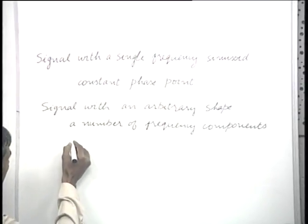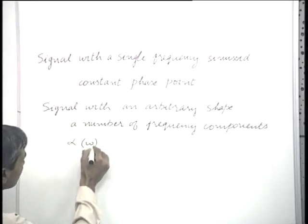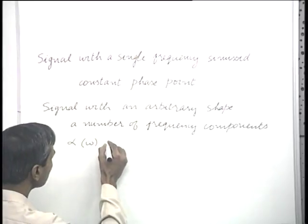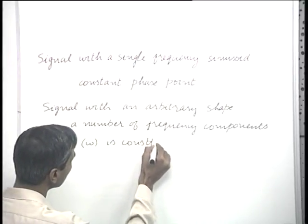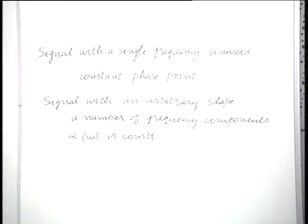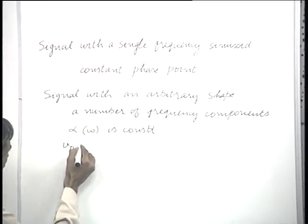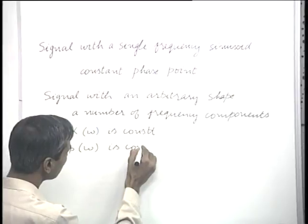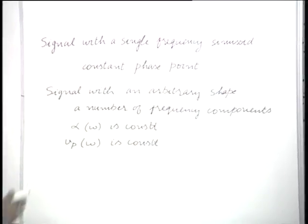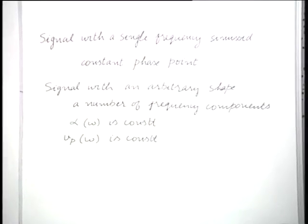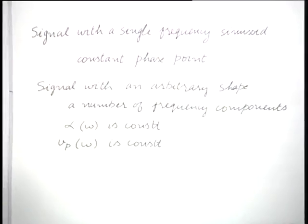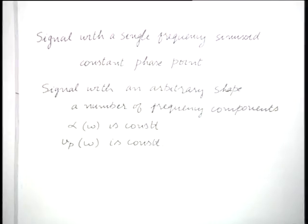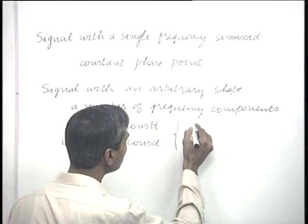The simplest situation would be that alpha, the attenuation constant, which in general is a function of omega, is constant for all frequency components. And the phase velocity, which also in general is a function of frequency, is constant. If these two simplifying conditions are satisfied, then no matter how long the transmission line or how much distance the signal travels, the signal shape will be faithfully reconstructed at the other end. These two conditions we associate with faithful reconstruction.